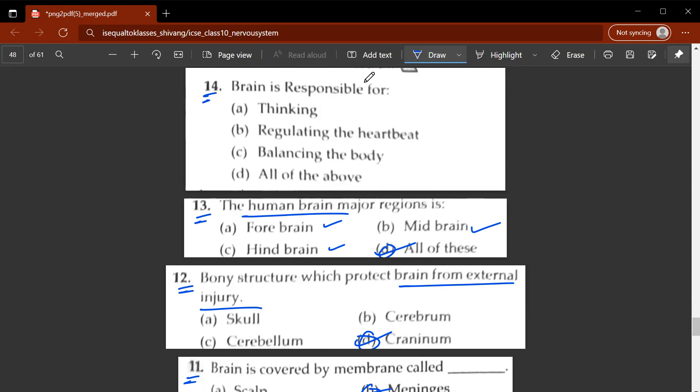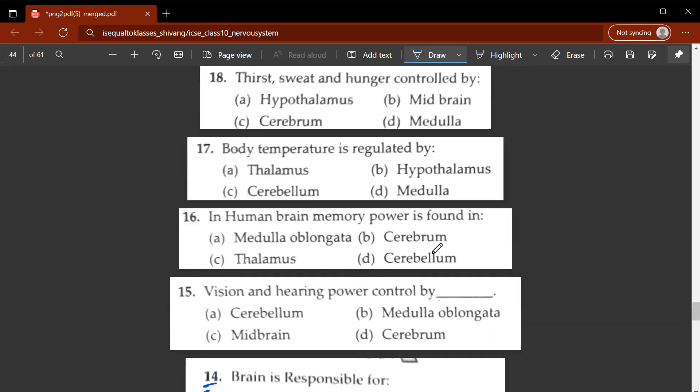Fourteenth question, brain is responsible for? So it could be D, all of the above. So what is all of the above? When A you have thinking, B you have regulating the heartbeat. Heartbeat is an involuntary action that is controlled by the brain itself. And then C, balancing the body. Fifteenth question, vision and hearing power is controlled by which part of the brain? It is controlled by C, the midbrain.